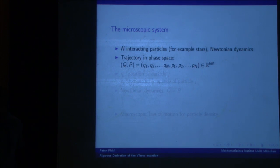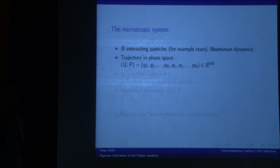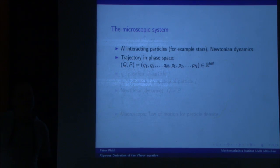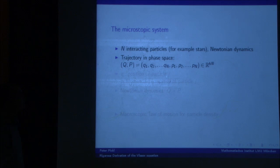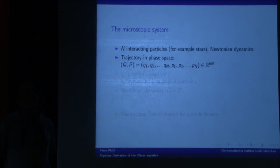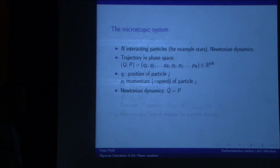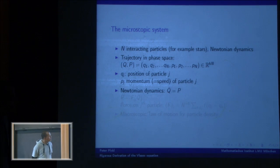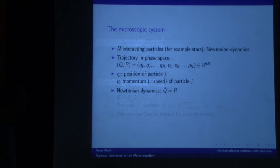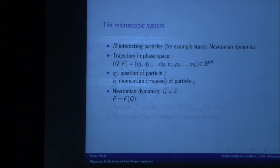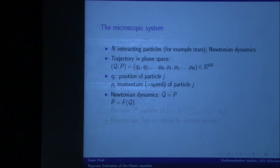Such a system is described by a trajectory in phase space. I'll use the notation: a vector (q, p), where q stands for the positions of the particles, p for their momenta, giving a vector in R^{6N}. The position of the first particle is q_1, its momentum p_1, and so on. The mass of all particles is equal to 1, so momentum and velocity are the same. I'm looking at a Newtonian time evolution: q-dot equals p, and p-dot equals some force term that depends only on positions, not momenta.